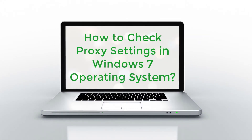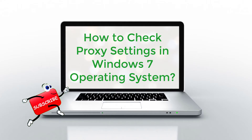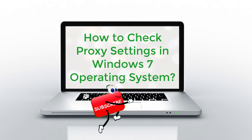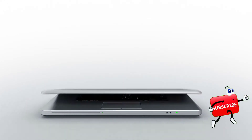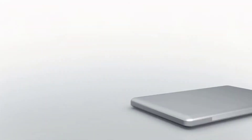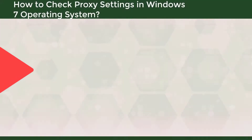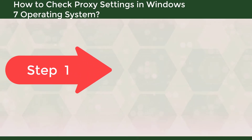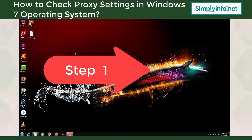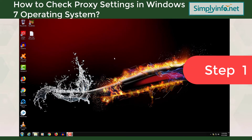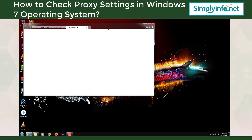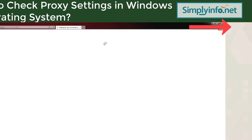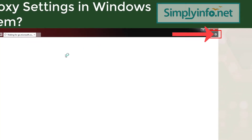How to check proxy settings in Windows 7. Step 1: Open Internet Explorer and go to Internet Options in the Tools menu.